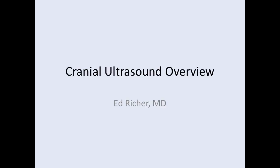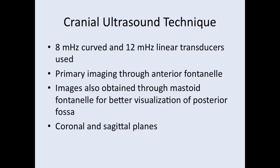This is going to be one of a few videos on cranial ultrasound. This first video is going to be on normal cranial anatomy. For cranial ultrasound technique, we use both 8 megahertz curved and 12 megahertz linear transducers, and we primarily image through the anterior fontanelle. We also obtain some images through the mastoid fontanelle, which is posterior to the ear, giving us better visualization of the posterior fossa structures such as the cerebellum.